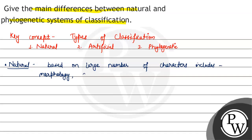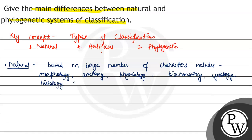Anatomy is the structural study. Along with morphology and anatomy, the characters also included physiology, biochemistry, cytology, and histology, etc. The natural system of classification was given by Bentham and Hooker, and it was used simply for identification.